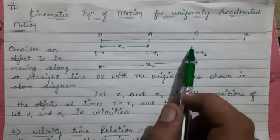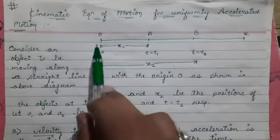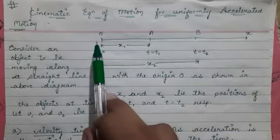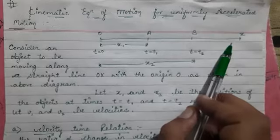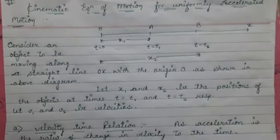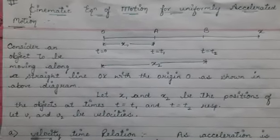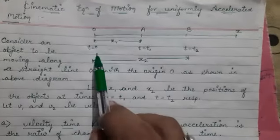we consider a single diagram in which we draw a straight line O and X. At origin, we know that time is equal to 0. That's why I am writing T is equal to 0.